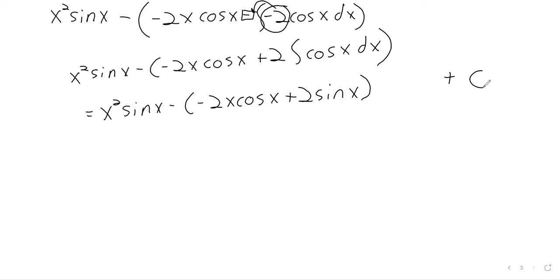The integral of the cosine is the sine. At this point, we do need to write the constant of integration. Now, we try not to fall on our face on the finish line here. That subtraction is going to distribute: x squared sine x plus 2x cosine of x minus 2 times the sine of x plus c.